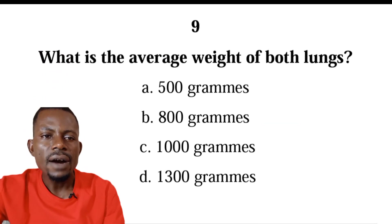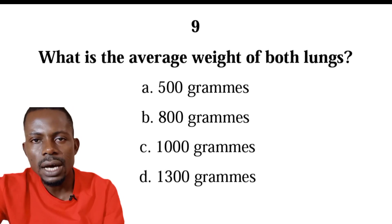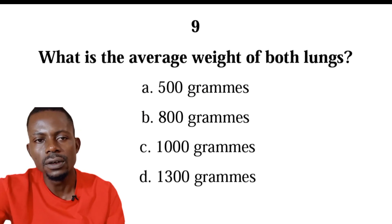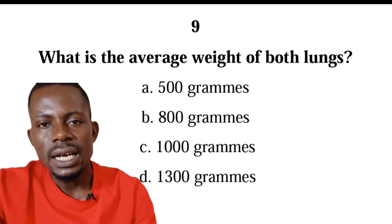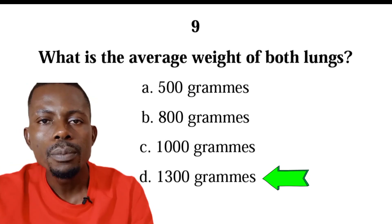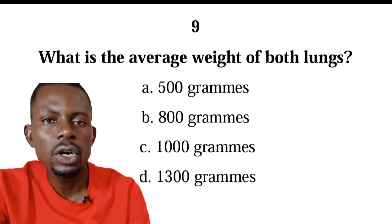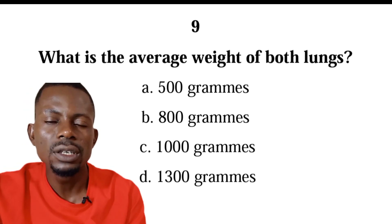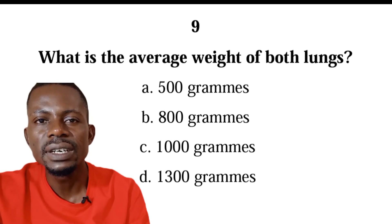Number nine: what is the average weight of both lungs? We have 500 grams, 800 grams, 1000 grams, or 1300 grams. The correct answer is D, 1300 grams or 1.3 kilograms. The lungs contribute 1.3 kilograms to total body weight. That means if you weigh 60 kilograms and your lungs are taken away, you would be 58.7 kilograms.